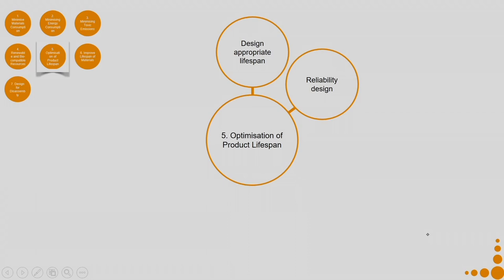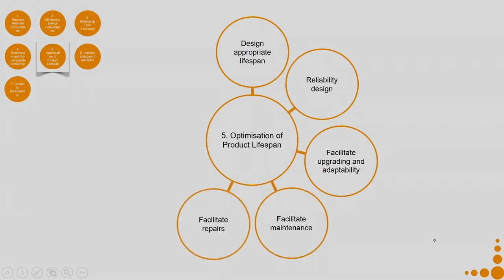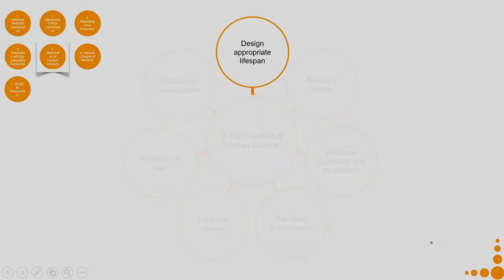Some products' lifespans are naturally small because they are lifestyle products — people discard them when they no longer fit into their lifestyle. Then design for reliability, facilitate upgradation and adaptability so the person can use the product for much longer, facilitate maintenance, facilitate repairs, facilitate reuse, and facilitate remanufacture.